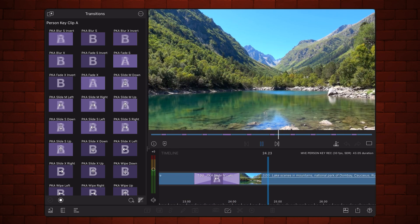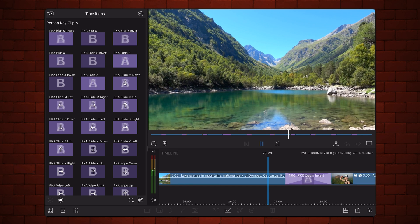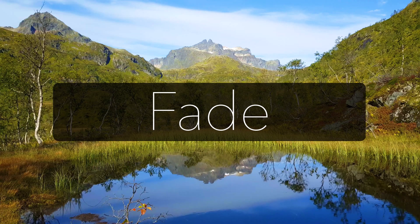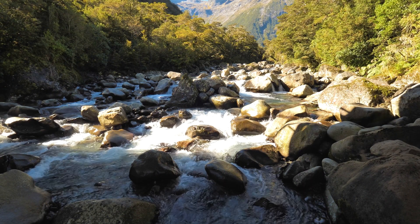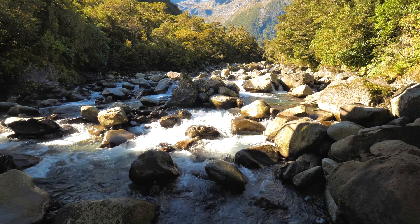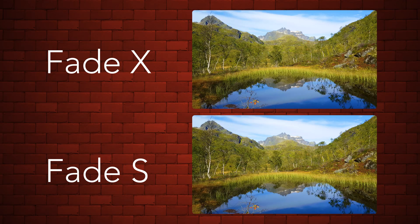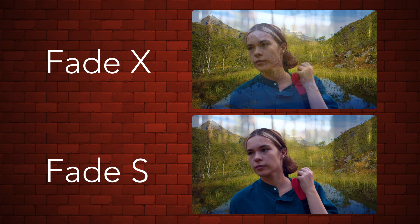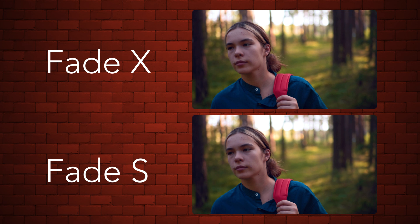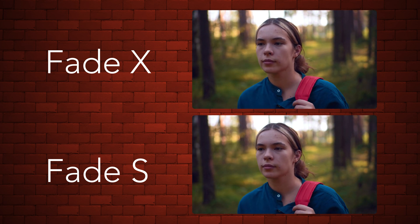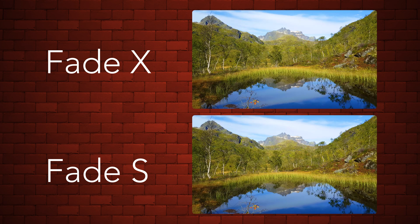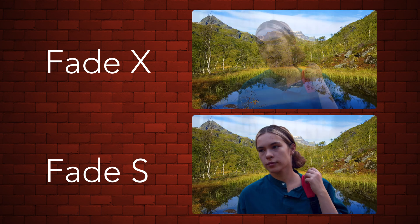Now let's take a look at some of the transitions. Here's the Fade S transition and the Inverted Fade S transition. You'll notice that some transitions have two variations: X and S. In the X variation, the subject transitions throughout most of the duration and the background starts fading in while the subject is still transitioning. In the S version, the subject and the background transition separately, one after the other.